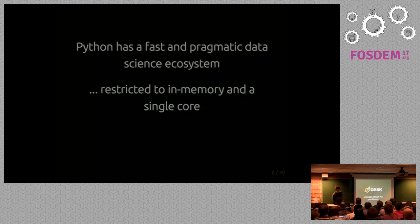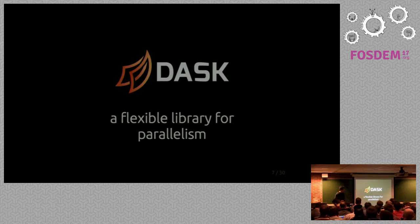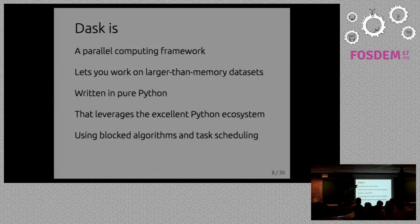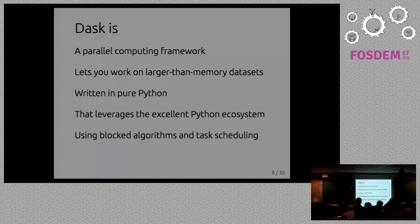So that's where Dask comes in. It's a flexible library for parallelism. It tries to do parallel computing, which lets you work on datasets that are larger than memory. It's a very simple library, written in pure Python. It obtains the goal of parallel and efficient distributed computing by just using the existing ecosystem. It doesn't do any computation itself. It builds task graphs based on blocked algorithms and schedules these graphs efficiently.